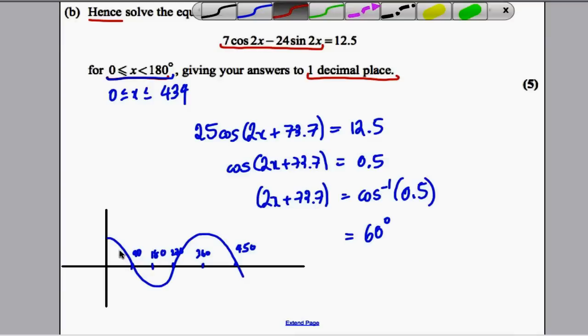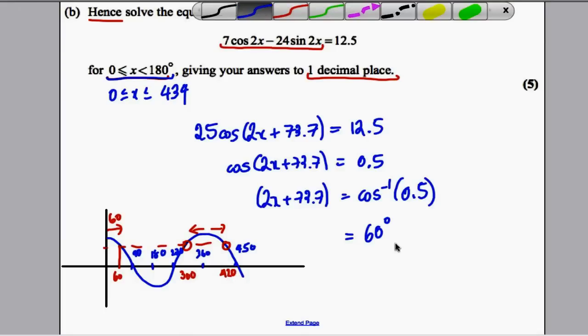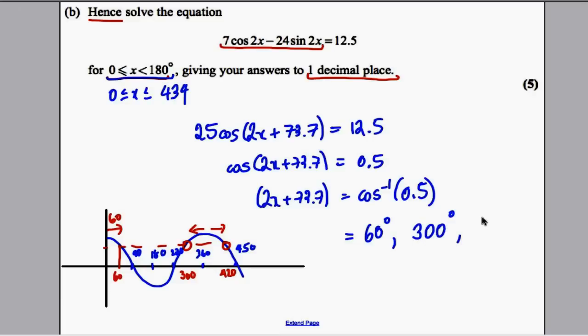60 is one of our answers here. Remember, that's 60 from a maximum. So where will the other points be? There will be one here and one here, 60 either way from 360. So one of the values will be 300 and the other will be 420. Therefore, our values are 60, 300, and 420.